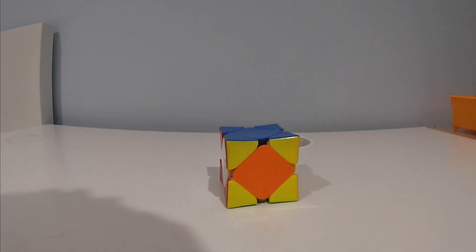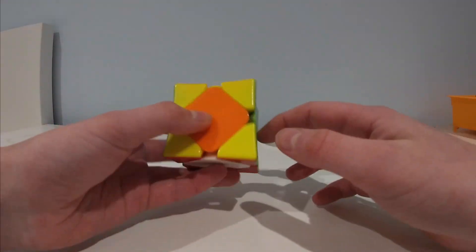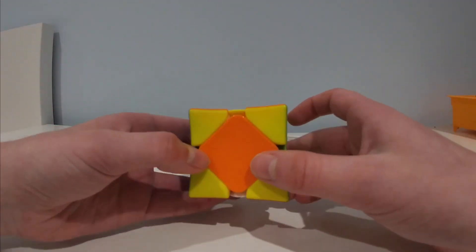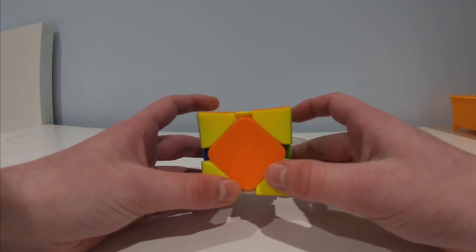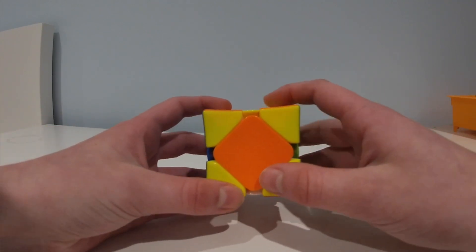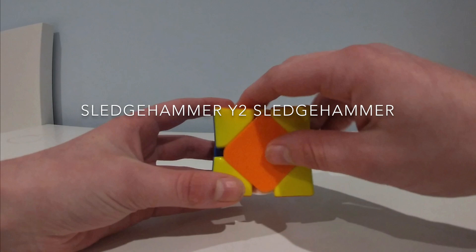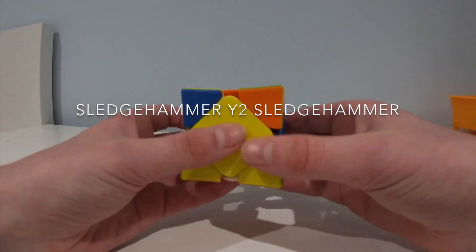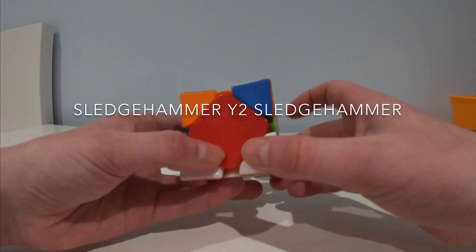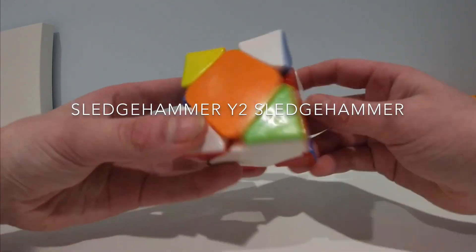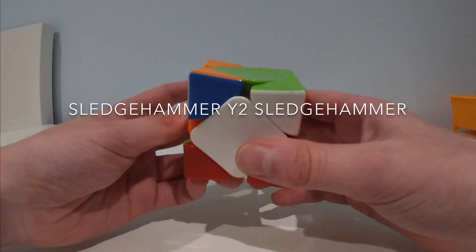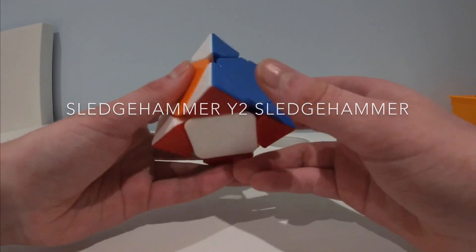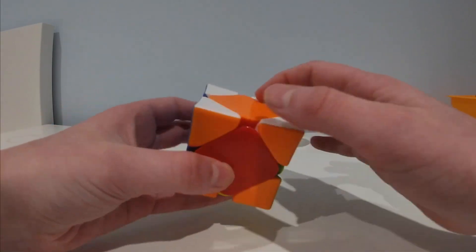What you want to do then, is you want to position the solved sides on the side, on each side, on the right and the left. And just do the same thing as before. The algorithm, R prime, F, R, F prime. And then Y2, 180 degree rotation. And do the algorithm again. R prime, F, R, F prime. You'll end up with this case.